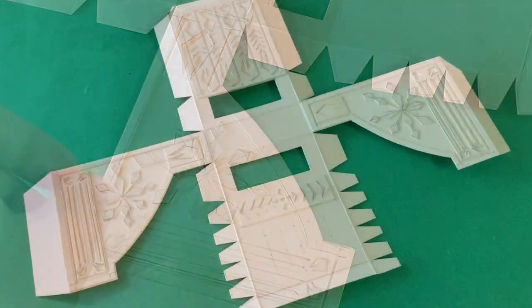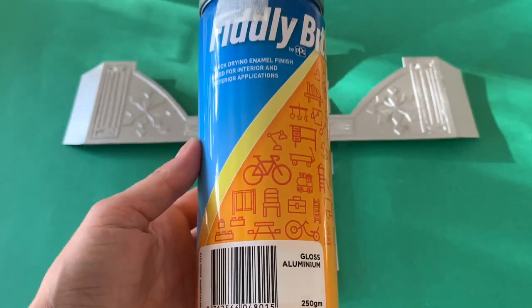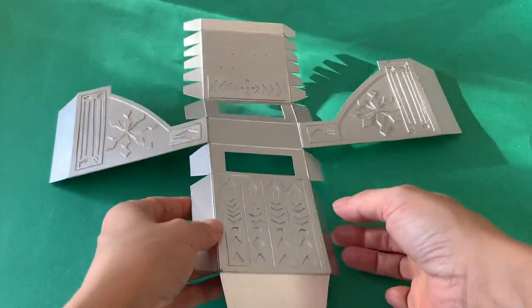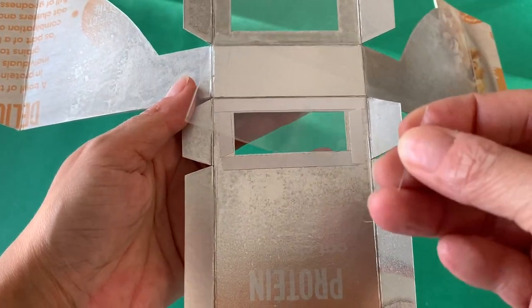Now paint the outside and top inside section of the register silver. Adhere double sided tape around both window areas to affix clear packaging for faux glass.